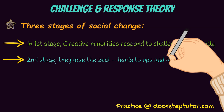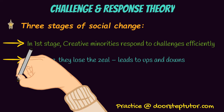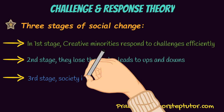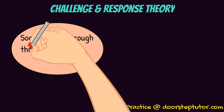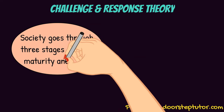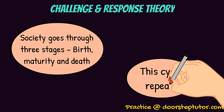In the second stage, they are not as enthusiastic. They lose the enthusiasm and zeal, and as a result there are a lot of ups and downs in the society. In the third stage, because of so much havoc and ups and downs, the society is finished. Then, when that society is finished, a new society develops — a new society is born. So society goes through three stages, namely birth, maturity, and death, and this cycle keeps on repeating itself.